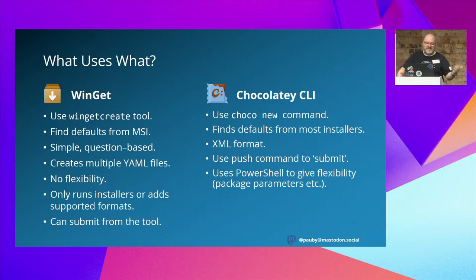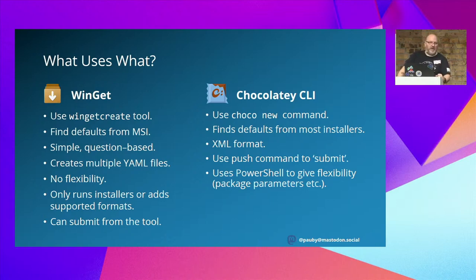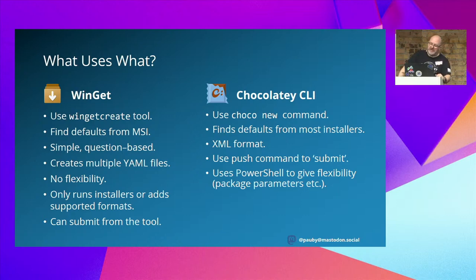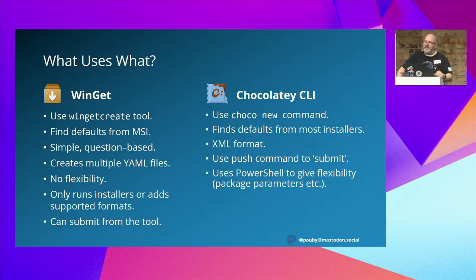Chocolatey CLI uses the 'choco new' command — it's not a separate tool, it's part of the Chocolatey CLI application. It finds defaults for most installers and supports 22 installer types on Windows — and believe it or not, there are more than that; there are just so many installer types on Windows. The metadata file it creates is a simple XML format — I know people shriek in horror at XML, but this is just very simple XML describing the package metadata. And you use the 'choco push' command to push it to your source. In contrast to Winget's inflexible YAML format, Chocolatey packages have PowerShell scripts inside that let you do whatever you want. If you can do it in PowerShell, you can do it in a Chocolatey package — scripts, license keys, registry keys, whatever.